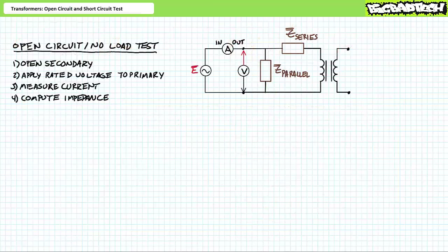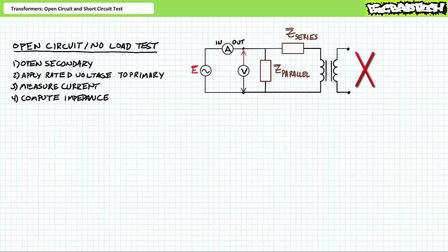Let's examine the open circuit or no load test first. This one's pretty easy. As the name implies, this test is performed with an open circuit or no load on the secondary winding such that no current flows through the secondary winding. The open circuit test necessitates a voltmeter and an ammeter be placed on the primary — or a wattmeter if you're super fancy — and then the rated voltage is applied to the primary.